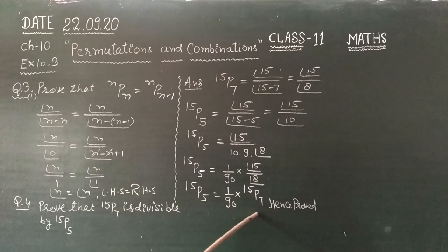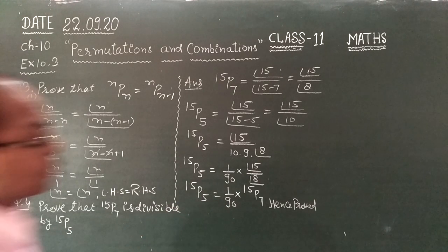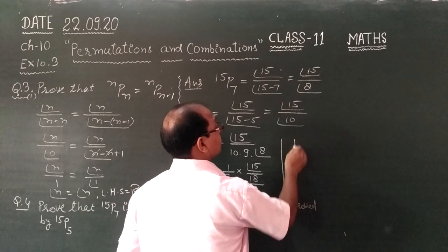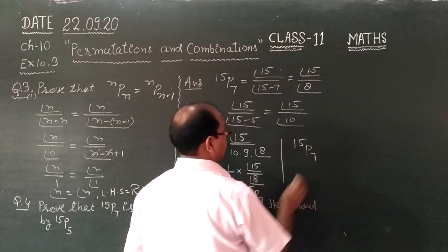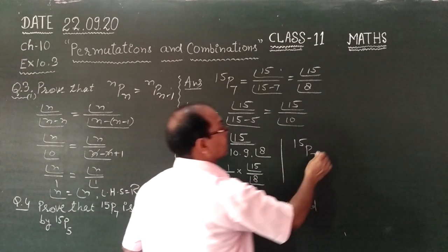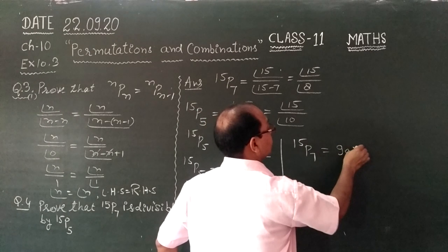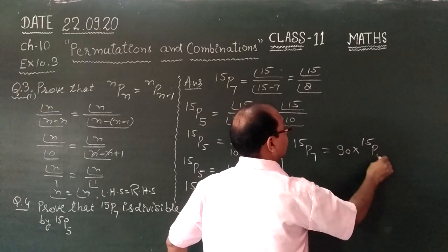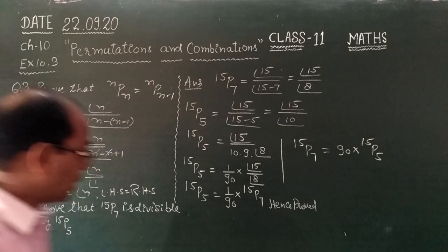15P7, so 15P5 is equal to 1 upon 90, 15P7. So it shows that 15P7 divided by 90 equals 15P5.